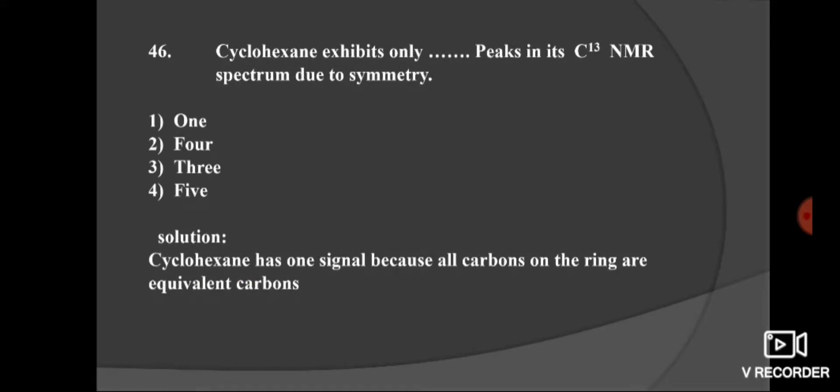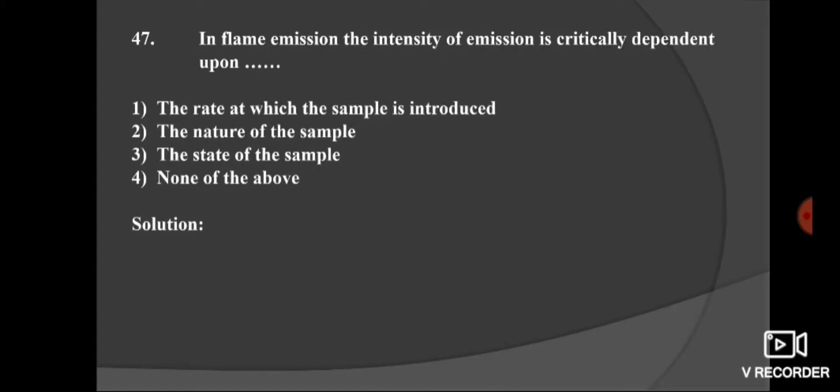Next question. Cyclohexane exhibits only how many peaks in its C-13 NMR spectrum due to symmetry. Options: 1, 1; 2nd, 4; 3, 3; and 4, 5. Here cyclohexane has one signal because all carbons on the ring are equivalent carbon.